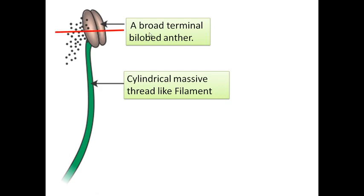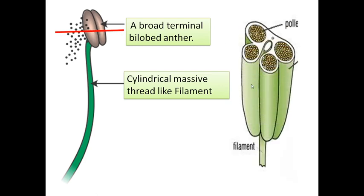If we give a transverse cut to this anther, we get a cross-sectional structure. Inside the two lobes we will see four corners, and at each of those four corners there are sac-like structures which we call pollen sacs or microsporangia. Today we will see how these pollen sacs or microsporangia are developed inside the anther.